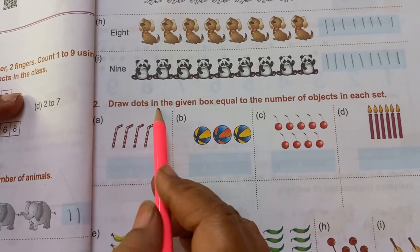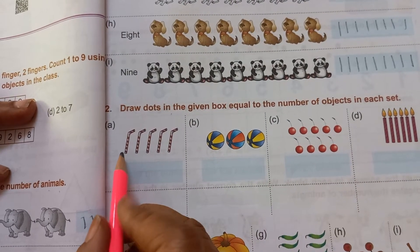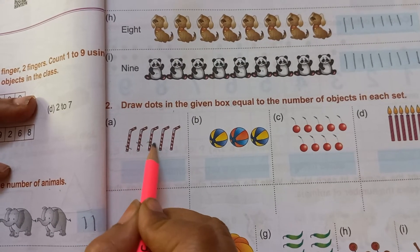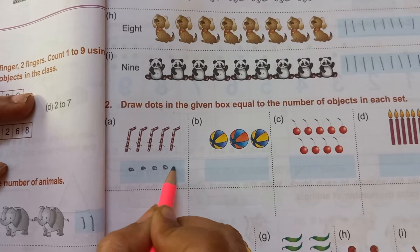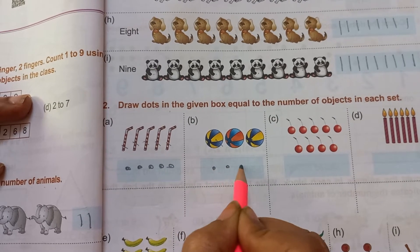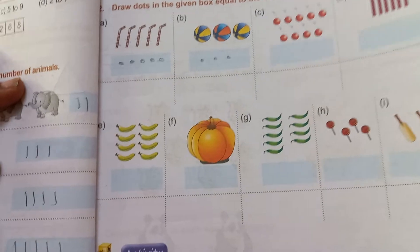Similarly draw the dots in the given box. You have to complete this exercise. First of all you have to count it properly. One, 2, 3, 4, 5. So give 5 dots. One, 2, 3, 4 and 5. Here 1, 2, 3. So 3 dots. One, 2, 3. Similarly you have to complete this exercise.